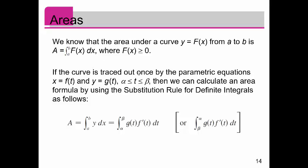Now here's the thing. If the curve is traced out once by the parametric equation, so now x is a function of t and y is a function of t, from alpha to beta is what t falls between. Then we can calculate the area formula by using the substitution rule of the definite integral. If you have the area under the curve between a to b of y dx, well that's just equal to the integral from alpha to beta. Remember alpha and beta are the starting and end points for t.